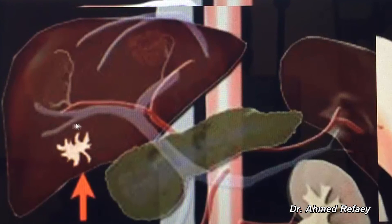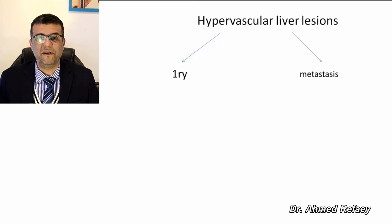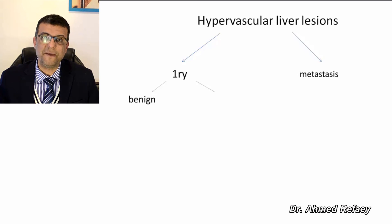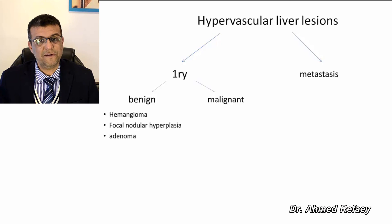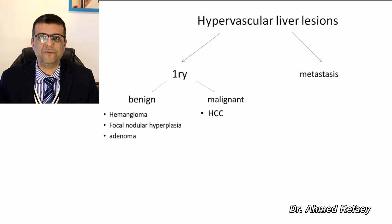The differential diagnosis of hypervascular lesions includes either primary hypervascular lesions or metastatic hypervascular liver lesions. Primary hypervascular liver lesions are either benign or malignant. The benign primary hypervascular liver lesions are hemangioma, focal nodular hyperplasia, and adenoma. The malignant primary hypervascular liver lesion is hepatocellular carcinoma, including the fibrolamellar hepatocellular carcinoma.